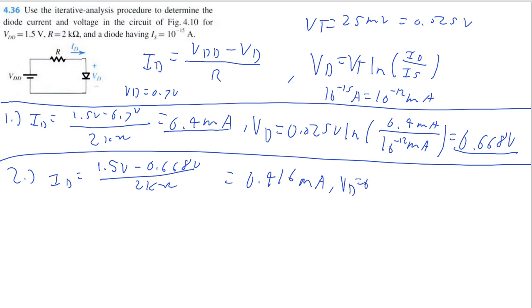So VD is equal to 0.025 times the natural log of 0.416 divided by 10 to the negative 12. That is equal to 0.669 volts. You can see this is already much closer to the second round. We only differed by a thousandth of a volt. But let's do it one more time just to be safe.